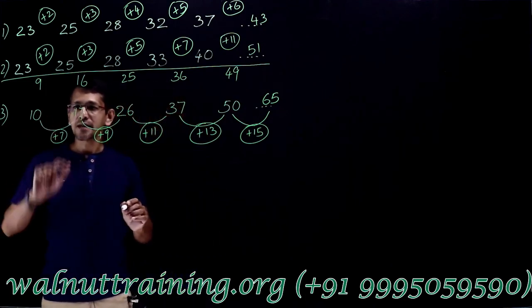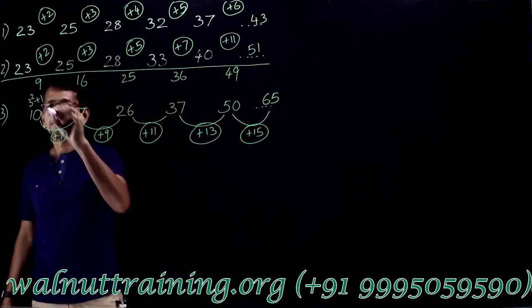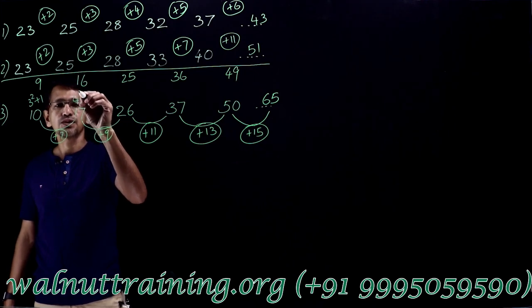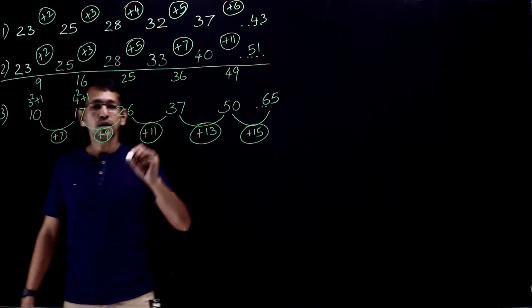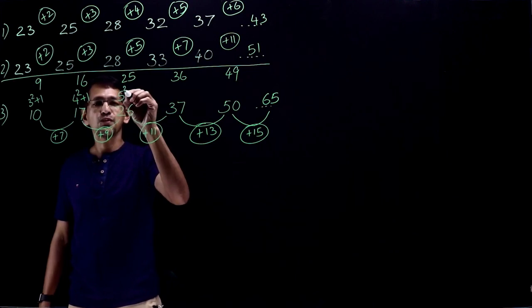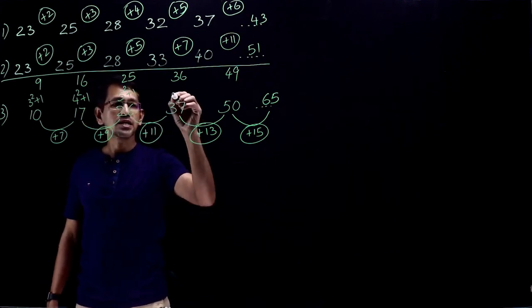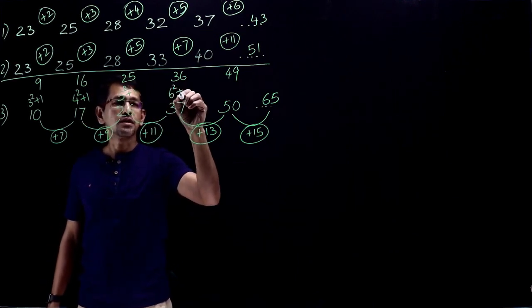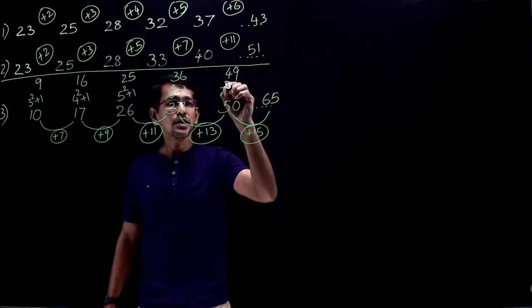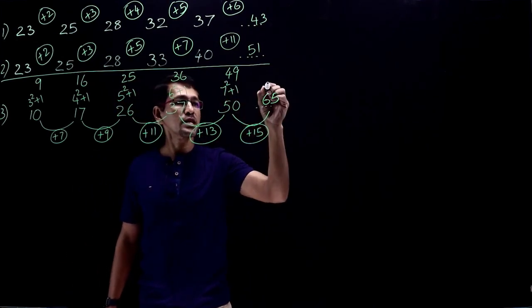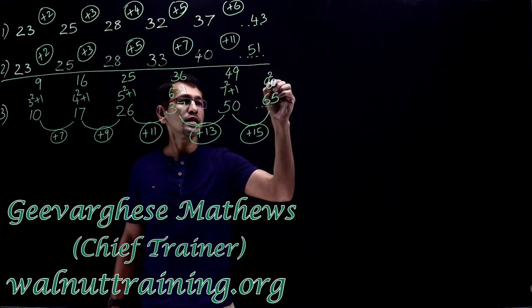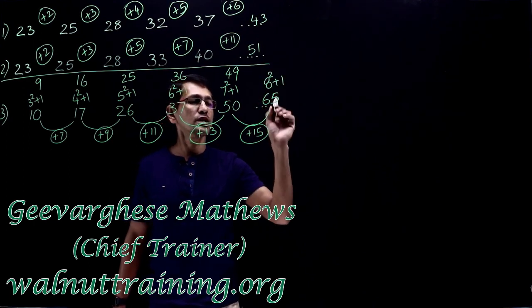Now, what is 10? 3 square plus 1. What is 17? 4 square plus 1. What is 26? 5 square plus 1. And 37? 6 square plus 1. What is 50? 7 square plus 1. Naturally, your answer must be 8 square, that is 64, plus 1, which is 65.